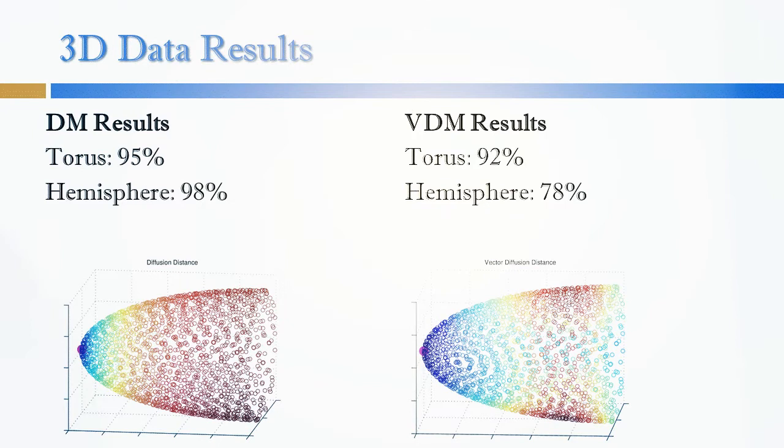In order to compare these two algorithms we tested the classification of their distance metrics according to the true geodesic distance. As you can see below, diffusion maps was much better at classifying the data correctly in comparison to vector diffusion maps, especially with the hemisphere data.